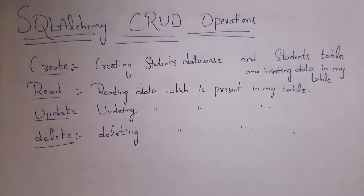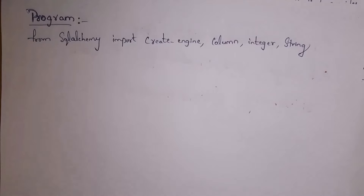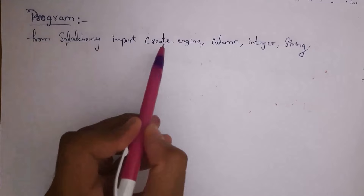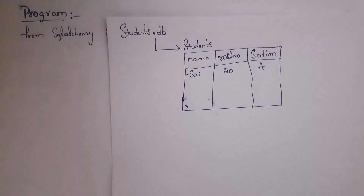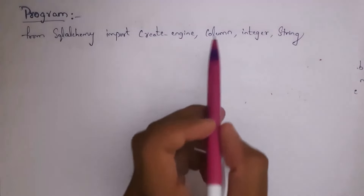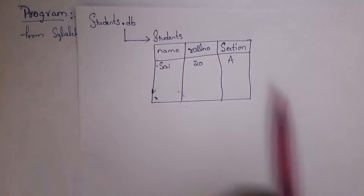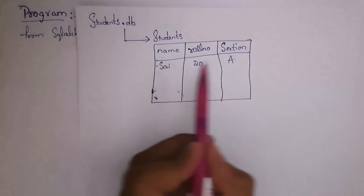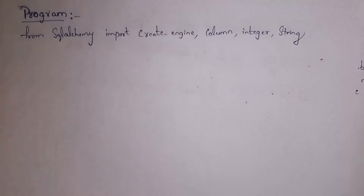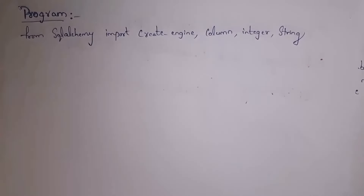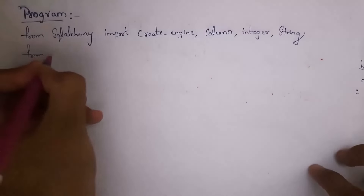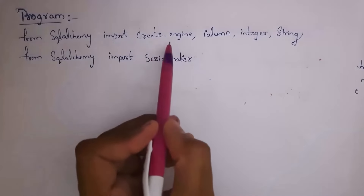First you need to import the SQLAlchemy module: `from sqlalchemy import create_engine, Column, Integer, String`. The `create_engine` function is used to create an engine to connect to a database. I want to create a table with three columns: name, roll number, and section — where name and section are strings and roll number is an integer. The second import is `from sqlalchemy import sessionmaker` — by using `sessionmaker` we can connect to the engine.